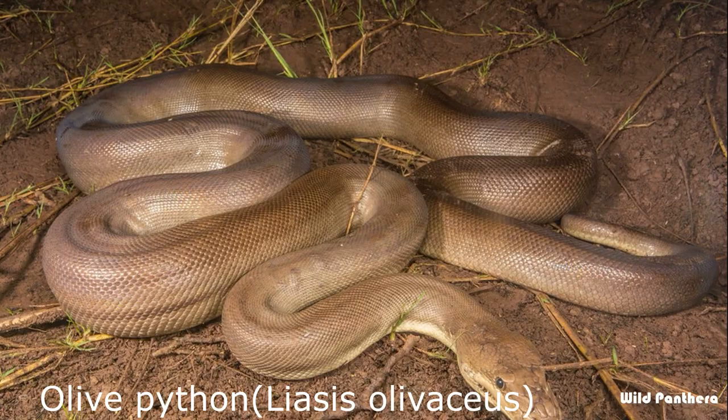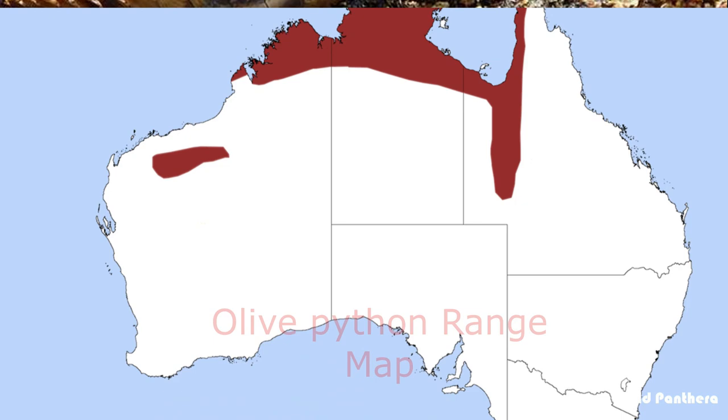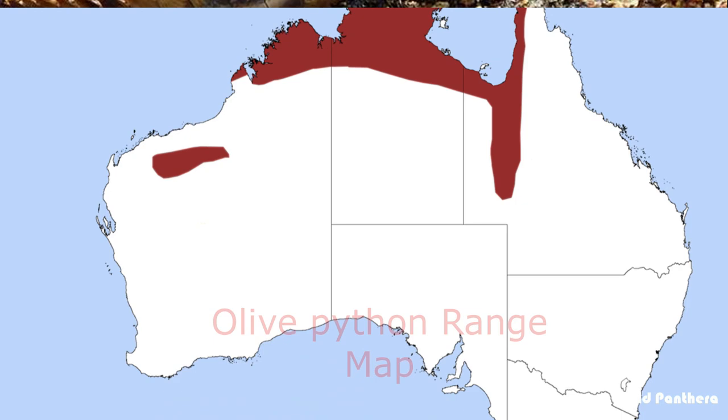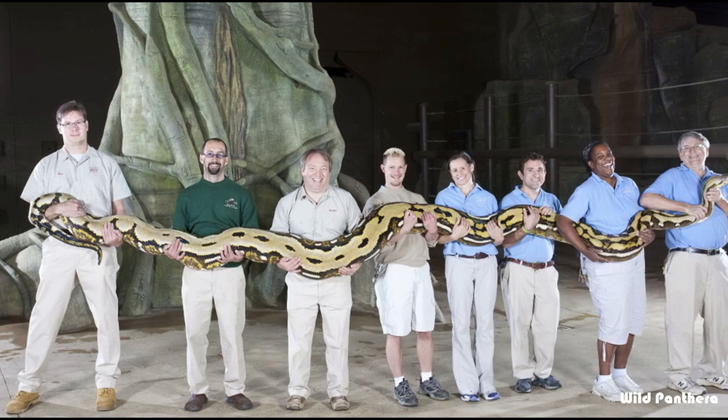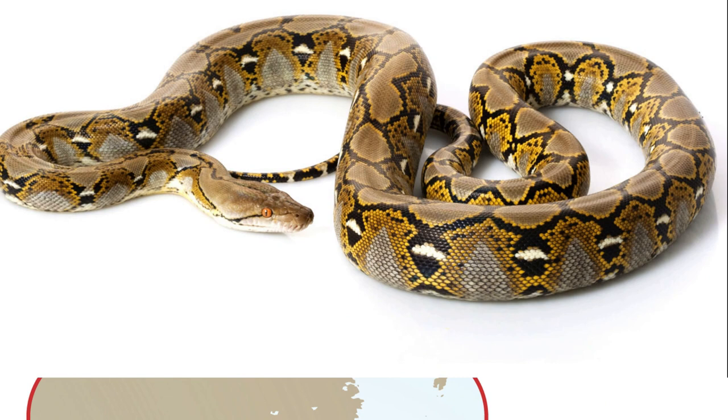Olive Python: This species is endemic to Australia. Two subspecies are recognized as being valid. Reticulated Python: The largest living member of the family Pythonidae is the Reticulated Python. This species is native to South Asia and Southeast Asia. It is the world's longest snake and is listed as Least Concern on the IUCN Red List because of its wide distribution.